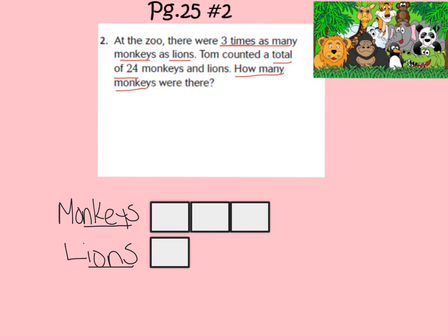Going back to our problem, it says that there were a total of 24 monkeys and lions. So we are going to draw a bracket around the squares for monkeys and lions and put the number 24 there. This means that if we were to add up all the numbers in the boxes, we would get 24. Remember, our question is asking how many monkeys were there? We have a problem — there are no numbers in our boxes for monkeys or lions. So we need to write an equation to help us figure out what numbers go in these boxes.